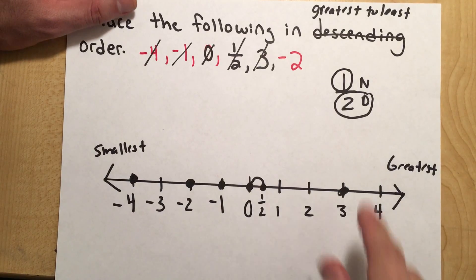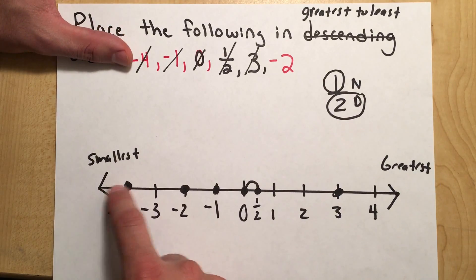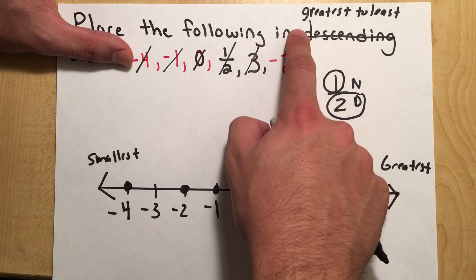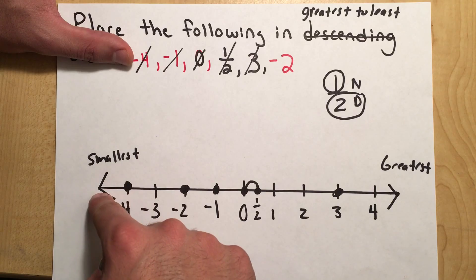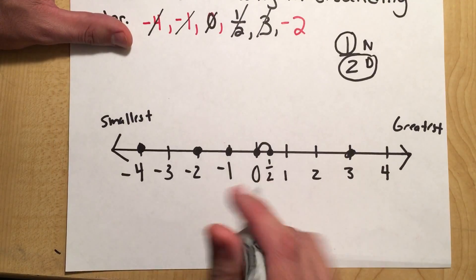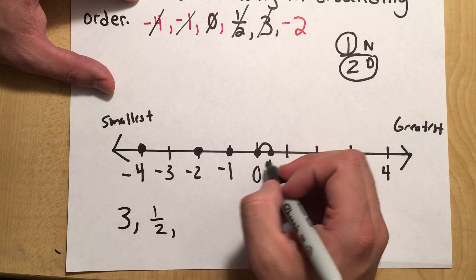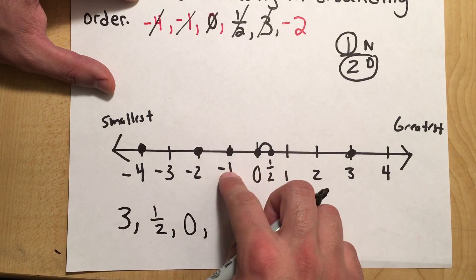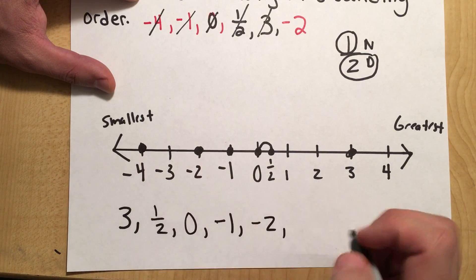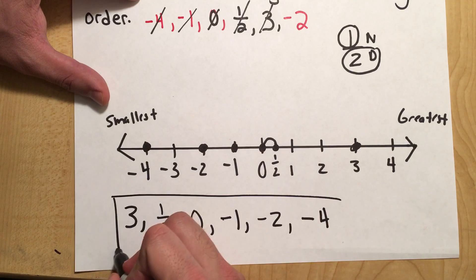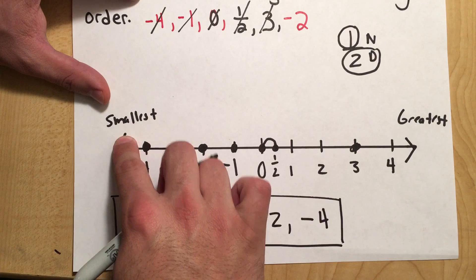But we're being asked to put them in order from greatest to least. So if we're reading the number line from left to right, from the smallest to the greatest, and now it's asking us to list them in order from greatest to least, we're going to start off with our biggest number, which is 3, and we're going to list them going down this way. So 3 would be our biggest number. Then after 3, we have 1 half. And after 1 half, we have 0. After 0, we have negative 1. After negative 1, we have negative 2. Then after negative 2, we have negative 4. So here are our numbers in order from greatest to the smallest, greatest to least, or in descending order.